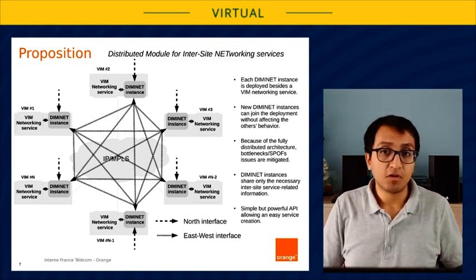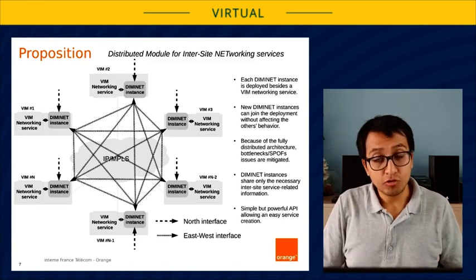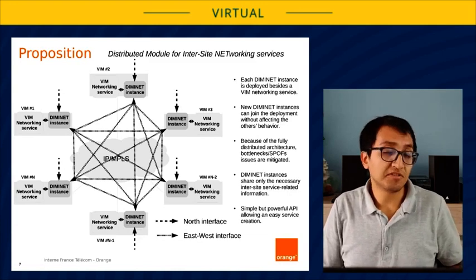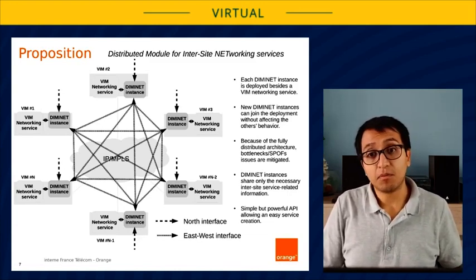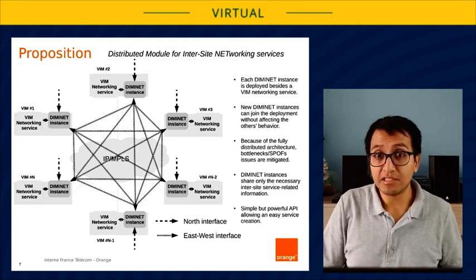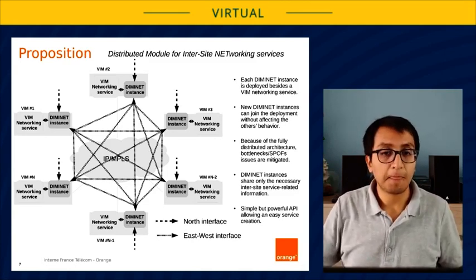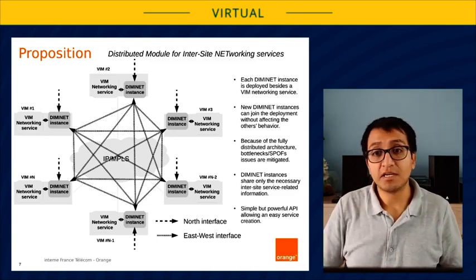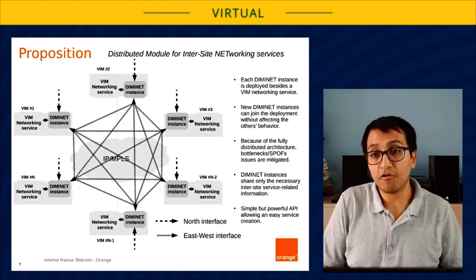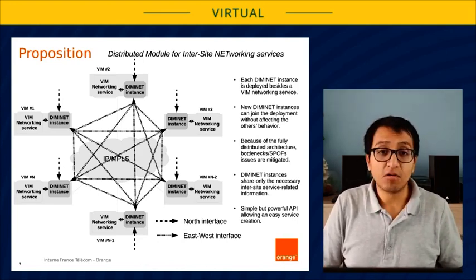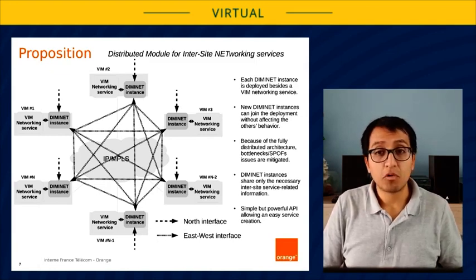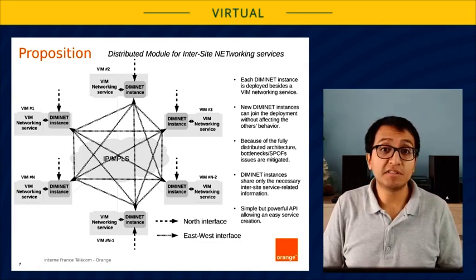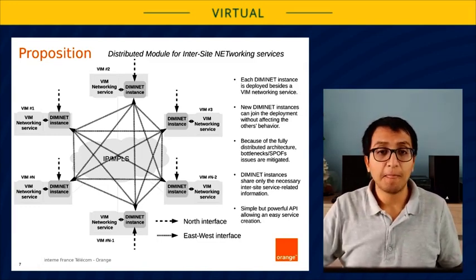If we do a comparison with the Tricircle project, when you use a Tricircle deployment even to create local elements, you must address to the central Neutron. In a Diminet deployment, this is not an issue, since you communicate directly with every Neutron instance. Diminet instances will also share only the necessary inter-site resource-related information, because by contacting only the relevant sites for a request, we will mitigate network communication overhead. Diminet takes really seriously the scope of a request.